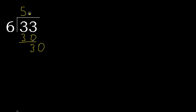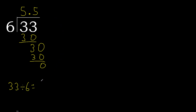Bring down 0 to make 30. 6 multiplied by 5 is 30 — that is not greater. 30 minus 30 is 0. Therefore finish: 33 divided by 6 is 5.5.